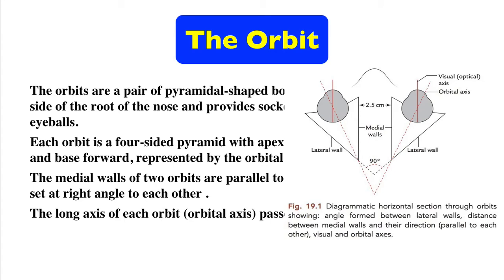Each orbit is a four-sided pyramid with the apex directed behind at the optic canal, and the base forward represented by the orbital margin. The medial walls of the two orbits are parallel to each other, but the lateral walls sit at a right angle to each other. The long axis of the orbit passes backward and medially.